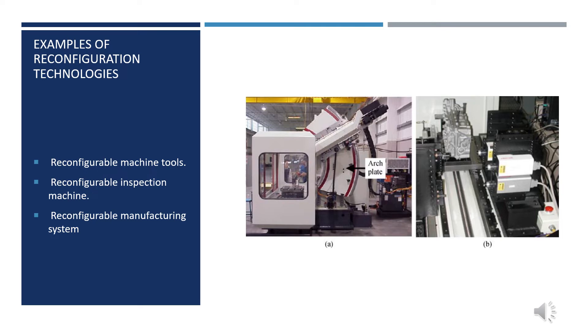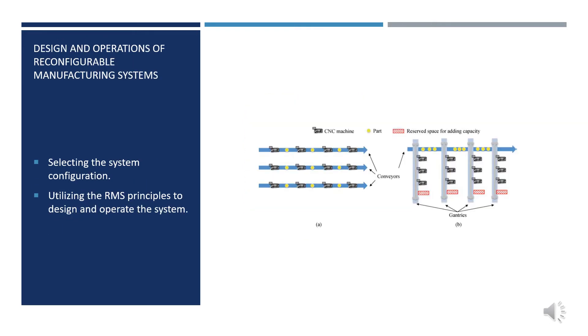The Ford Motor Company called their system a flexible reconfigurable machine system — flexible because of CNC machines that can produce multiple variants of products. This leads to the discussion of the design and operation of a reconfigurable manufacturing system.